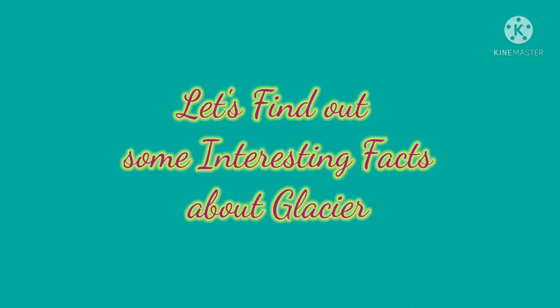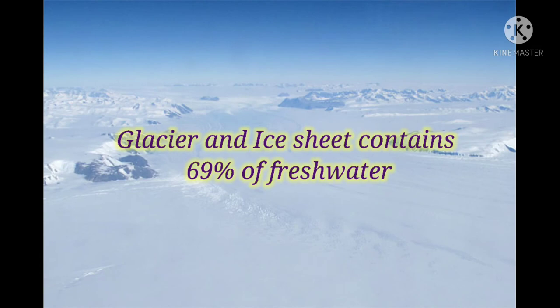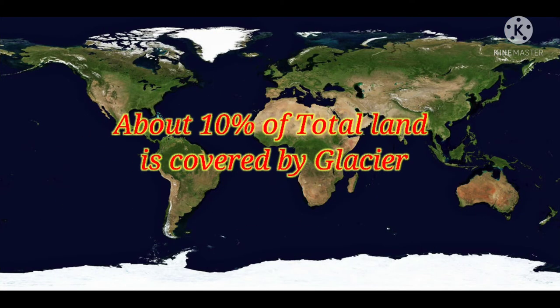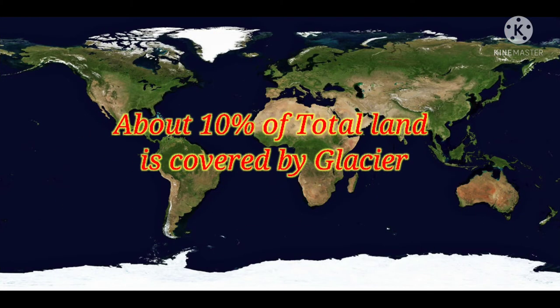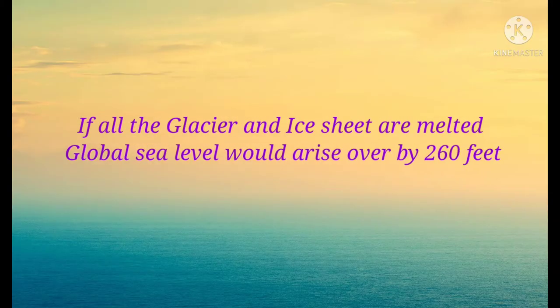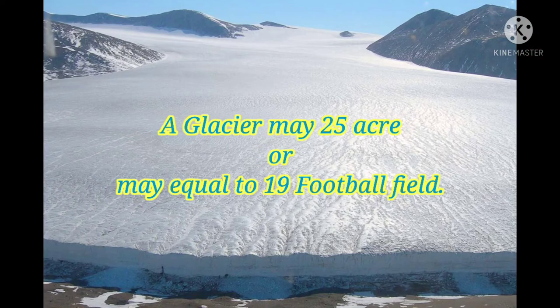Let's find out some interesting facts about glacier. Glaciers and ice sheets contain about 69% of freshwater. About 10% of the total land of the earth is covered by glaciers and ice sheets. Do you know if all glaciers and ice sheets on the earth melted, global sea level would rise by over 260 feet? A glacier may be a minimum of 1 square kilometer to almost 25 acres, or may equal to 19 football fields.